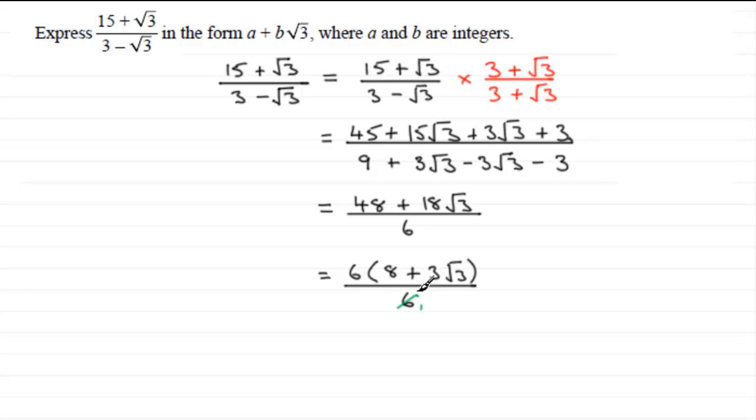So you end up with that answer then, 8 + 3√3. So if they did ask for the values of a and b, you can see that a is 8 and b would have been the 3.